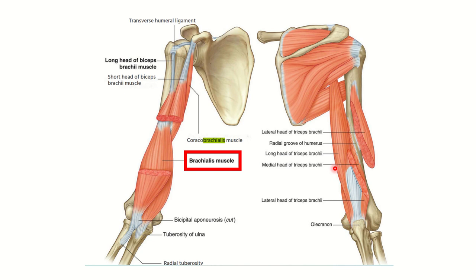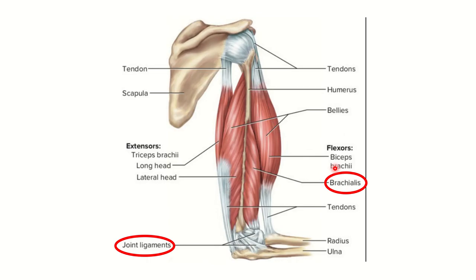In this picture we can see biceps brachii — short head and long head — descending down to the radius and inserting into the radial tuberosity. The brachialis muscle arises from the shaft of the humerus and inserts into the tuberosity of the ulna. Brachialis is the deepest structure on the anterior surface of the humerus, descending closely to the elbow joint with some fibers attaching to the elbow joint ligament.